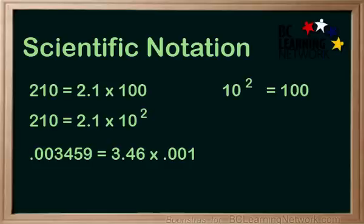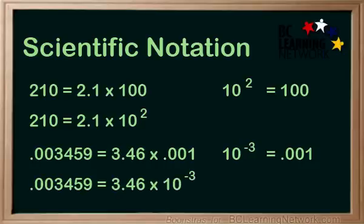Let's look at .003459. First, we need to write a number between 1 and 10, which is 3.46. Note that we've rounded this to two decimal places. This would be 3.46 times .001. .001 is 1 over 1,000, which would be 10 to the negative 3. So .003459 is 3.46 times 10 to the negative 3.